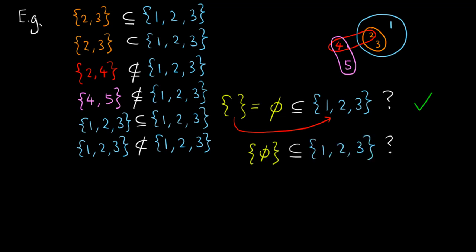Let's take this one step further and ask: is the set containing the empty set a subset of {1, 2, 3}? This time, the empty set is an element of the set on the left-hand side, so we need to check whether the right-hand side also contains the empty set as an element. The answer, of course, is no, because the only elements on the right-hand side are 1, 2 and 3. So the set containing the empty set is not a subset of {1, 2, 3}.